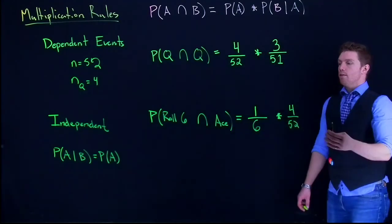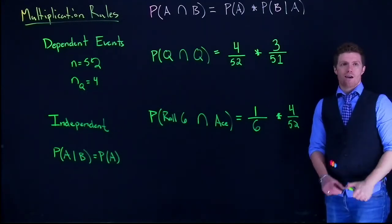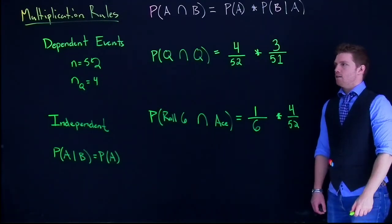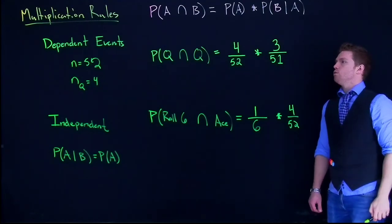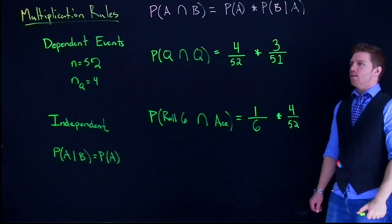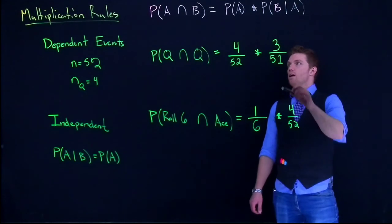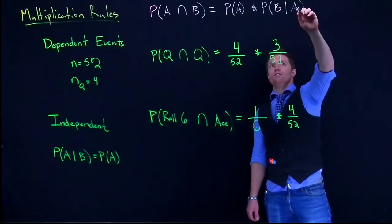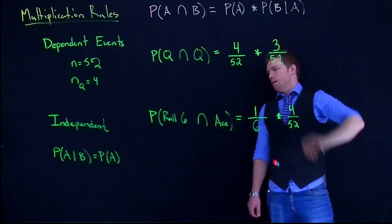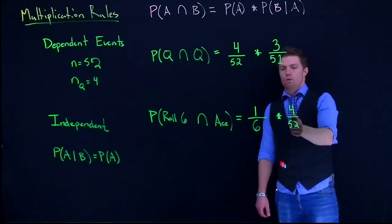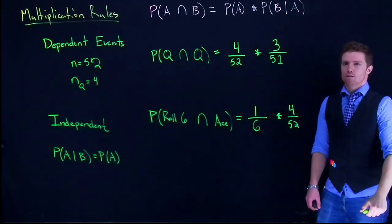And we can just multiply those across because they are in fact independent. So this is how we have to think about our multiplication rules for our independent and our dependent events. If they are dependent, we've got to take into account this conditional. And if they're not, we can just multiply the probabilities by each other.